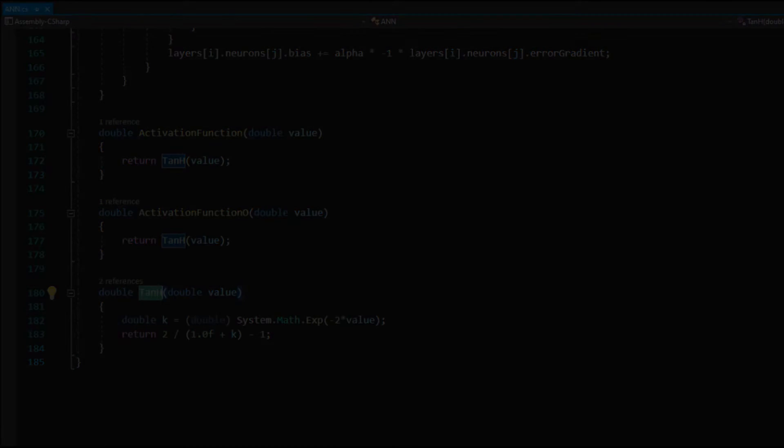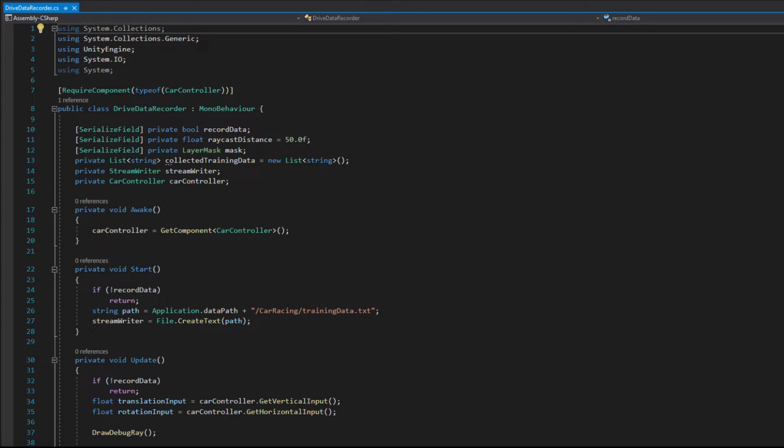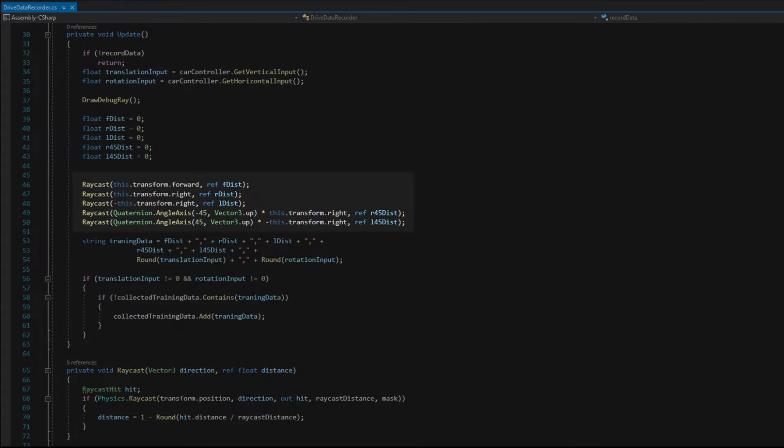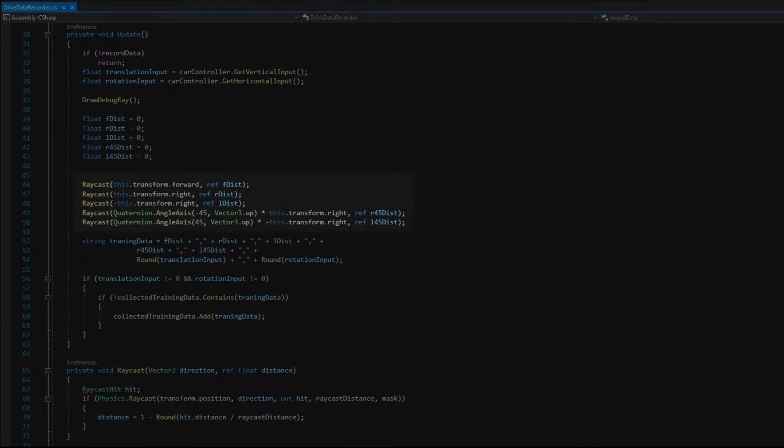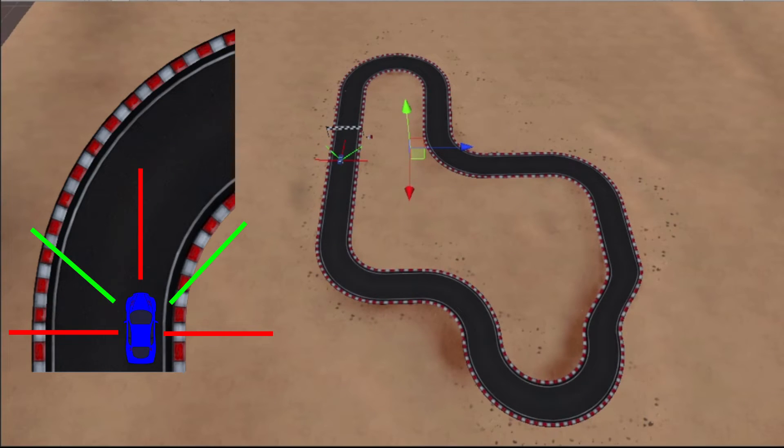I also have created a script that will be attached to a player car. That script will cast 5 rays every frame to figure out where walls are. To simplify data passed to the network I used the value 0 when a wall was out of the raycast distance, 0.5 when the distance to the wall was less than the raycast distance but larger than half of that distance, and 1 when the distance to a wall was less than half of the raycast distance.